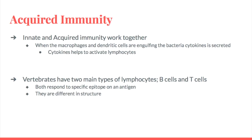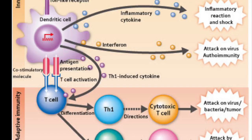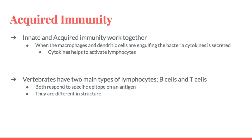Innate and acquired immunity actually work together. When macrophages and dendritic cells are engulfing bacteria, cytokines are secreted, and these cytokines help activate lymphocytes. Vertebrates have two main types of lymphocytes: B cells and T cells. Both respond to a specific epitope on an antigen, meaning each cell is highly specific — no two B cells or T cells are working to resist the same antigen.